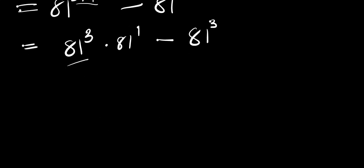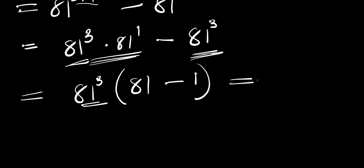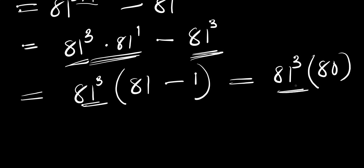We notice 81^3 appears in both terms, so we factor it out. We get 81^3 times (81 minus 1), since 81^1 is 81 and dividing 81^3 by 81^3 gives 1. This simplifies to 81^3 times 80.